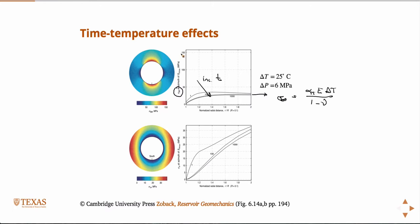So, you can see in this, for this particular problem, with a delta T of 25 degrees, this is actually 25 degrees cooler. So the mud would be 25 degrees cooler than the rock in this example. Then, you get an increase in, this is a change in the hoop stress of something like 25 MPa.